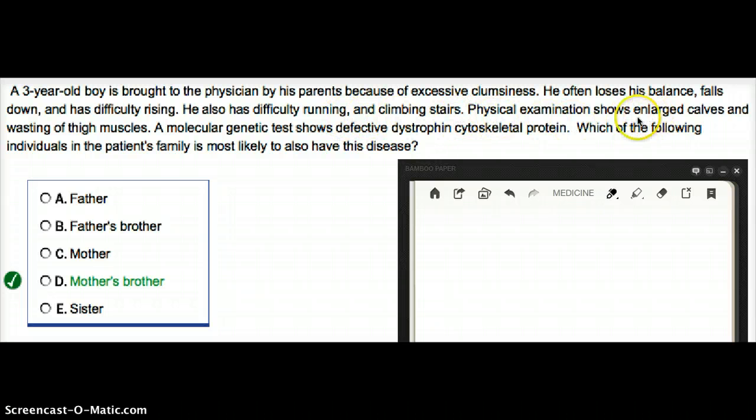Physical exam shows enlarged bilateral calves and wasting of the thigh, so we are talking about either Duchenne or Becker. A molecular genetic test shows defective dystrophin cytoskeletal protein. Which of the following individuals in this patient's family is most likely to have this disease?